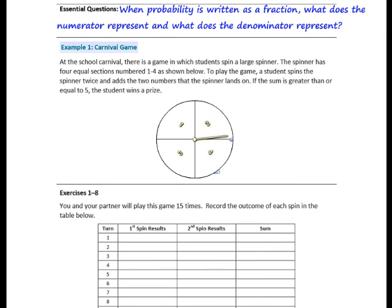At the school carnival, there is a game in which students spin a large spinner. The spinner has four equal sections, numbered 1 through 4, as shown below. To play the game, a student spins the spinner twice and adds the two numbers that the spinner lands on. If the sum is greater than or equal to 5, the student wins a prize. You and your partner will play this game 15 times and record the outcome of each spin in the table below.